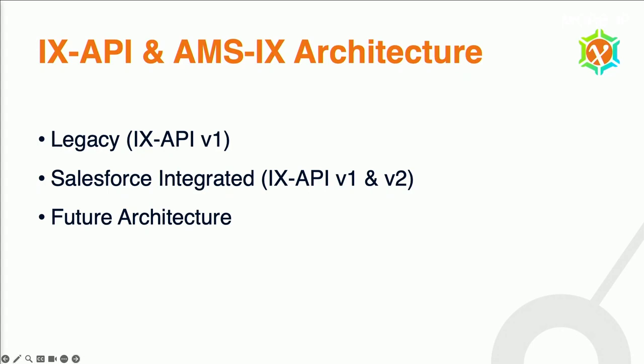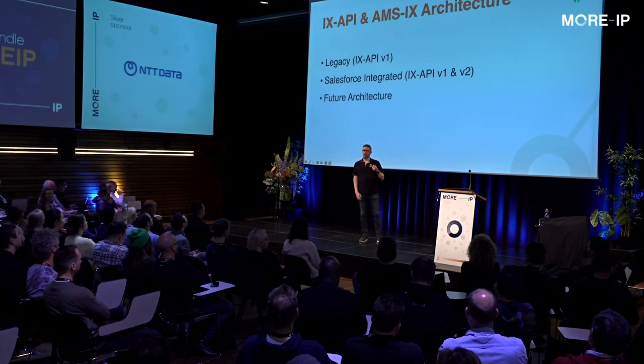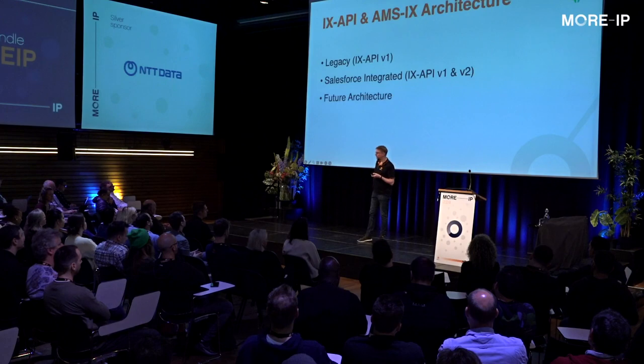The next important thing is implementation. It's nice if you have a standard with open API specs and sandboxes, but now let's use it. That's always a challenge for us because it means you have to develop things, put them into production, and find the people, resources, and time to do that. From the very beginning we had what we now call a legacy V1 implementation built on the MyM6 platform. That is used and is in production. But since we're migrating away from MyM6 to Salesforce and a separate OSS layer, we need to migrate the IX API application as well. We currently have a Salesforce-integrated IX API implementation that supports both the V1 and the V2 specification.